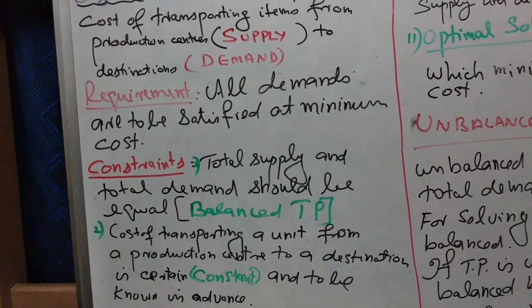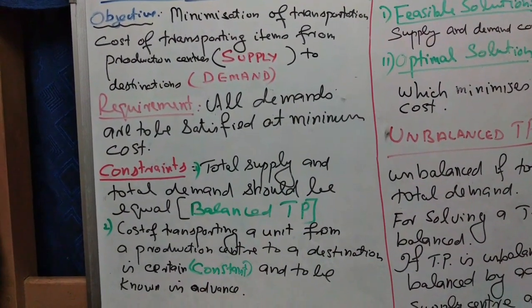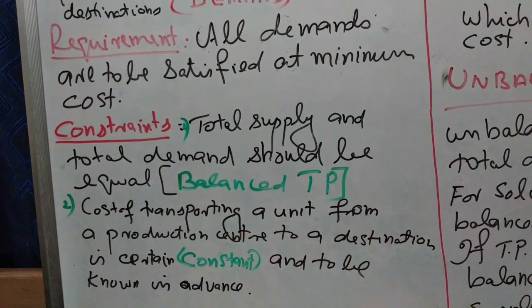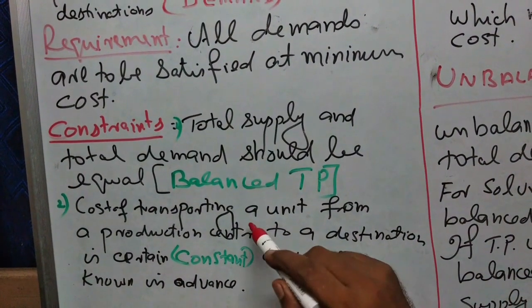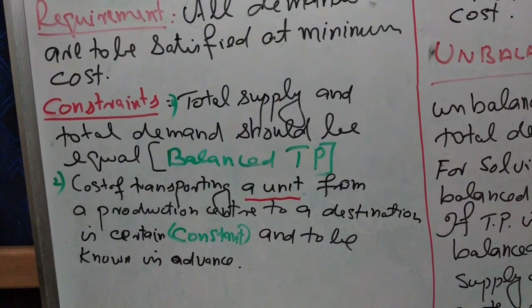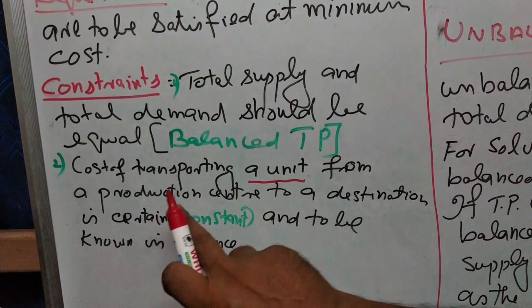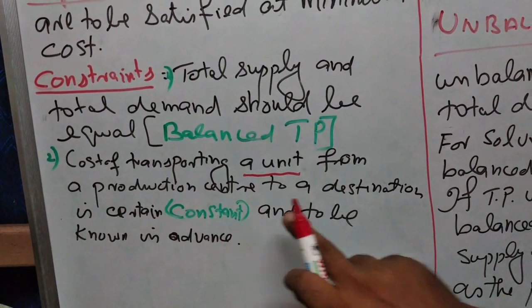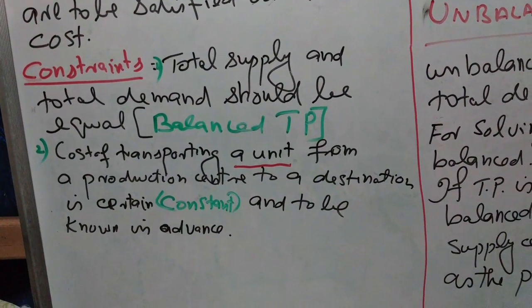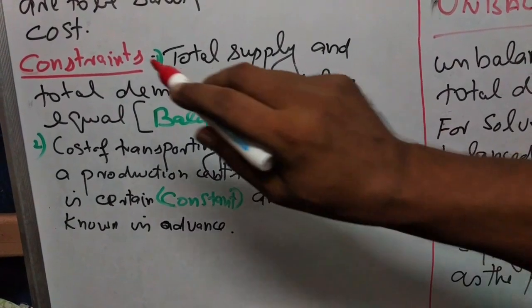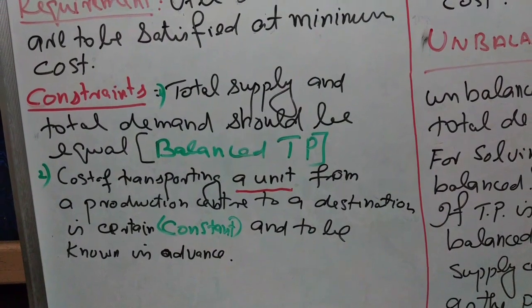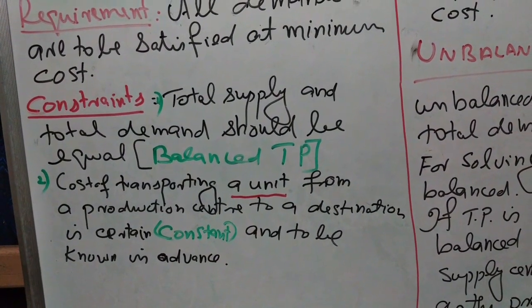A further condition is that the cost of transporting a single unit from a production center to a destination is certain, that is constant, and to be known in advance. That is the constraint. That is the minimum requirement of a transportation problem.